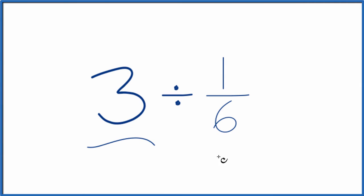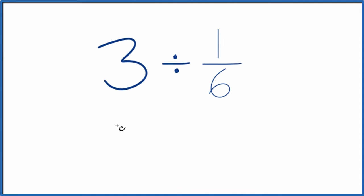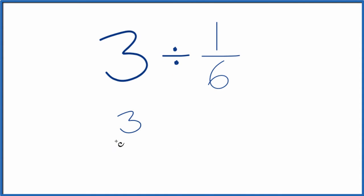Let's divide 3 by 1/6. Here's how we do it. We'll call this 3 over 1 — it's still 3, we're just dividing by 1. But having this as a fraction is really helpful.